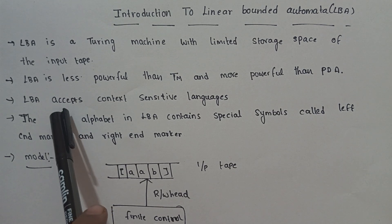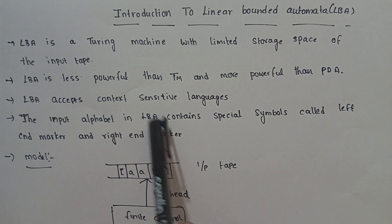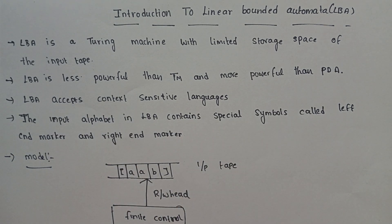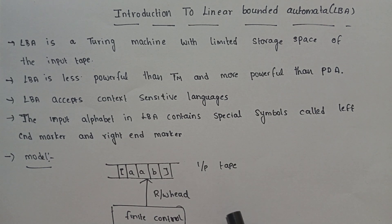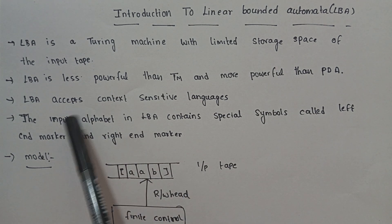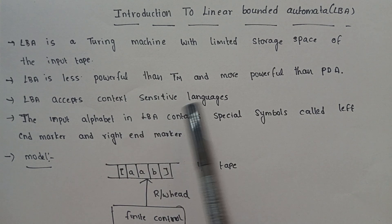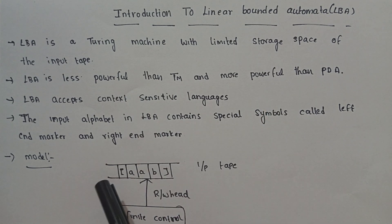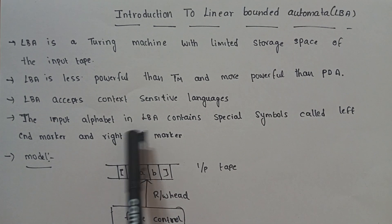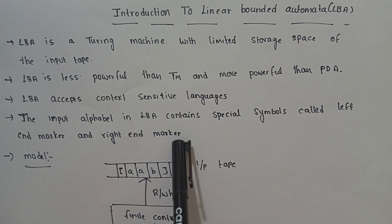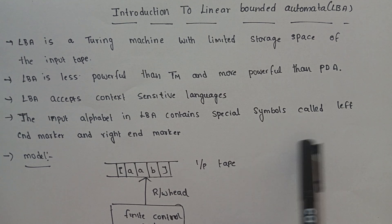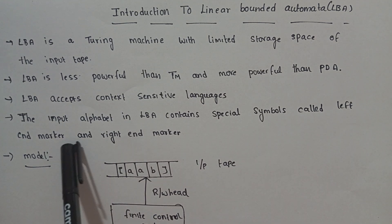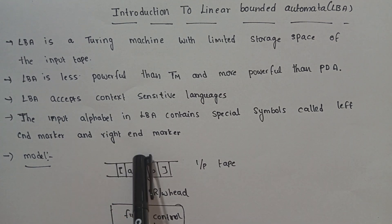Linear bounded automata accepts context-sensitive languages, which are generated by context-sensitive grammars. The input alphabet in a linear bounded automata contains special symbols called the left-hand marker and right-hand marker.